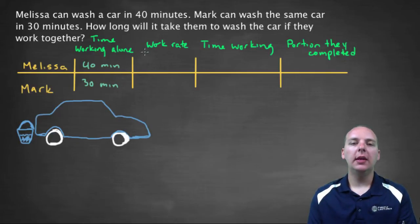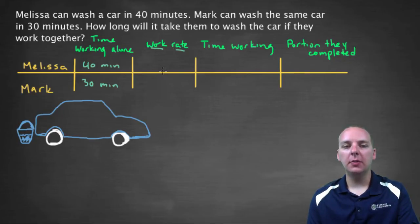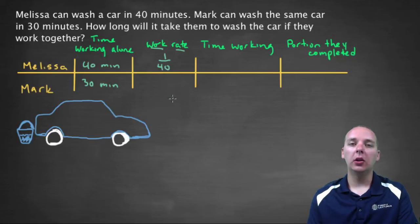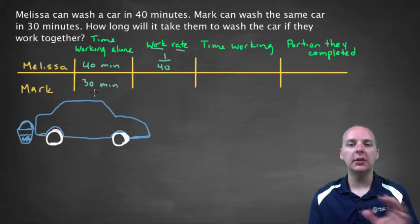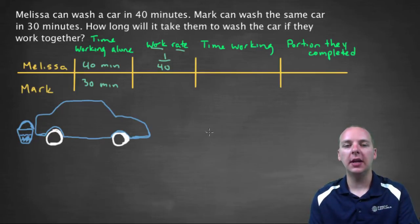Now one thing that we have to know is their work rate. How fast are they working? 40 minutes is not a rate. Their work rate is always going to be one over the amount of time working alone. And let me explain what that means. You basically are just going to take the reciprocal of 40 or the reciprocal of 30, but not just because, there's a reason for this. What you're saying is Melissa can complete one whole task. She can wash the whole car in 40 minutes.